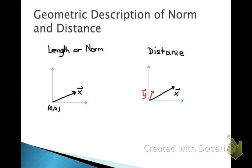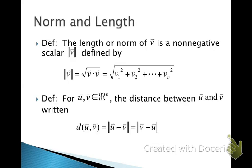Let's look at length or norm and distance geometrically. Here we have a vector x in the Cartesian plane. The length or norm of x is simply the distance from the tip of x to the origin. To find the norm of a vector, the notation uses double bars, whereas absolute value uses single bars. The norm equals the square root of the inner product of a vector with itself — that amounts to squaring each element of the vector, finding their sum, and taking the square root.